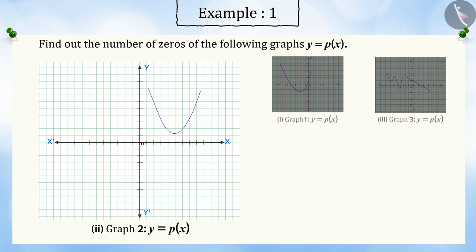In the next graph, you can see that the graph doesn't intersect the x-axis anywhere. Hence, the number of zeros in this case will be zero.